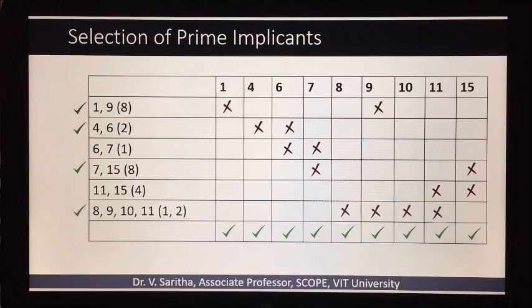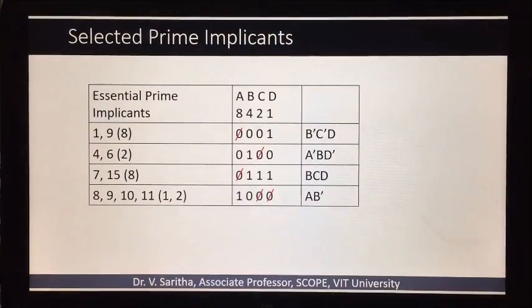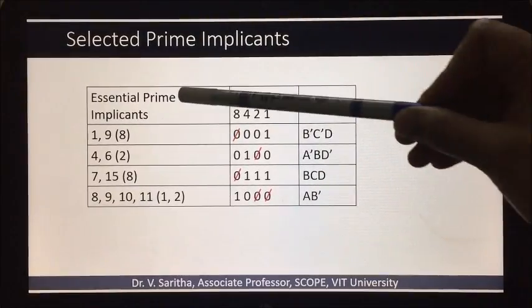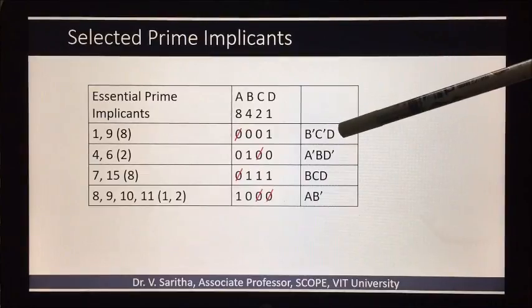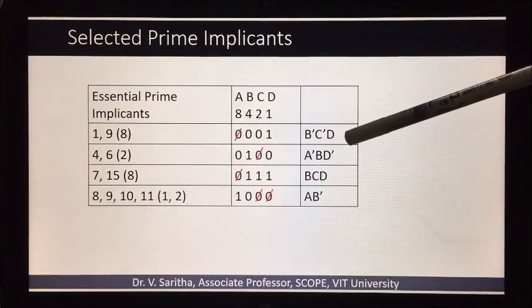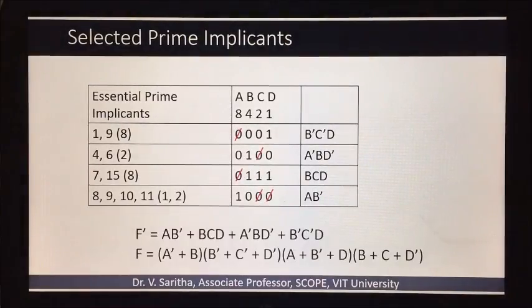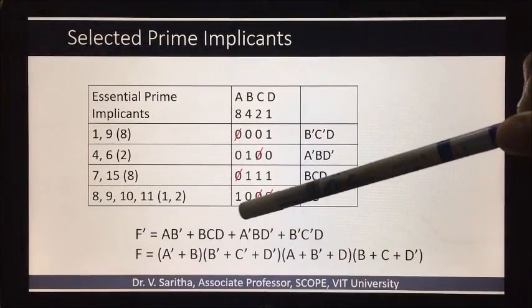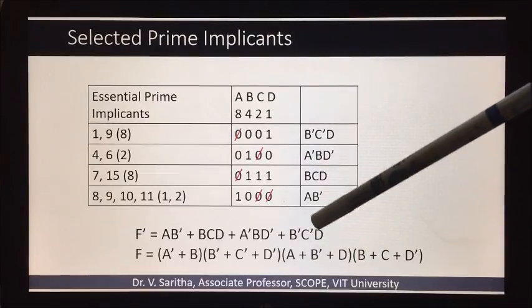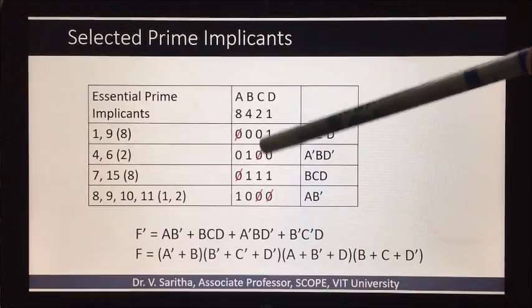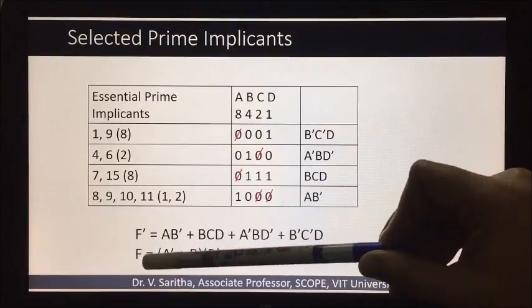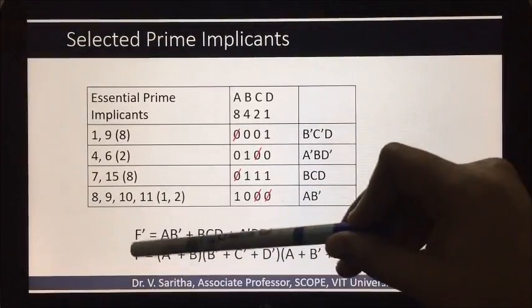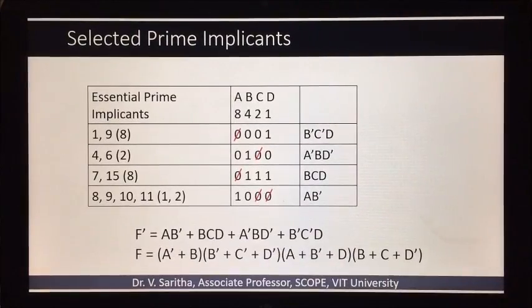Out of six, four are the essential prime implicants. If you see here, essential prime implicants we will list out and we will write sum of mean terms expression only first. But we call it as F complement because these are pi terms but not sigma terms - that is, these are max terms but not mean terms. So if we give complement of this we will get F in POS. F complement is in SOP, F is in POS.